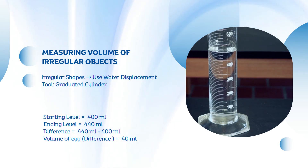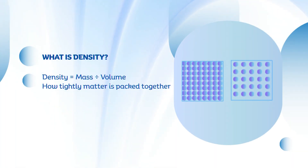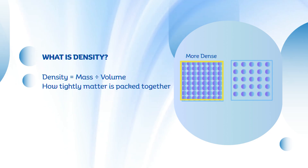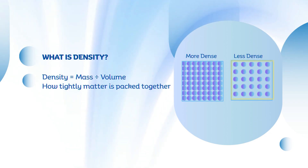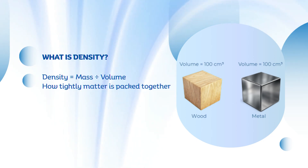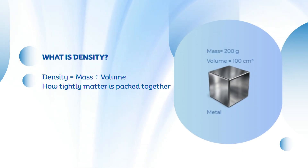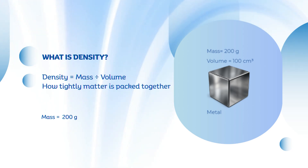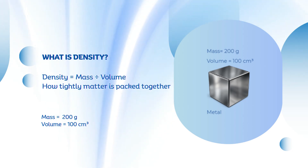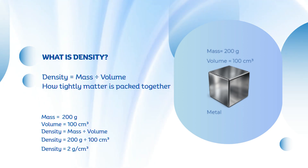Now that we know how to find volume, let's combine it with mass to calculate density. Density describes how tightly the particles of matter are packed into a given space. If the same amount of space holds more mass, the substance is denser; if there's less mass in that space, it's less dense. Let's say we have two cubes of the same size — one made of wood and one made of metal. The metal cube feels heavier because it has more matter in the same space, giving it higher density. For example, a small solid metal cube has a mass of 200 grams and a volume of 100 cubic centimeters. To find its density, divide mass by volume: 200 ÷ 100 = 2 grams per cubic centimeter. This means every cubic centimeter of that metal cube contains 2 grams of matter, making it very dense.